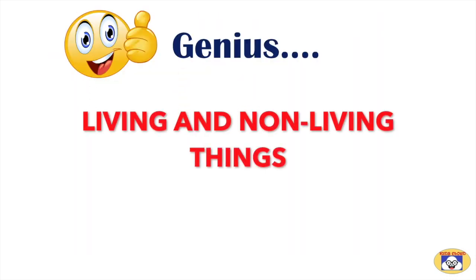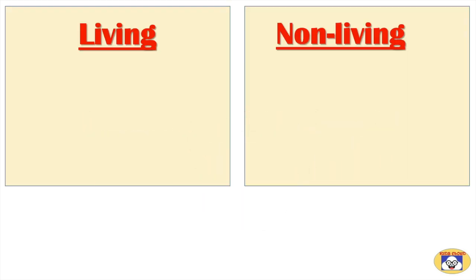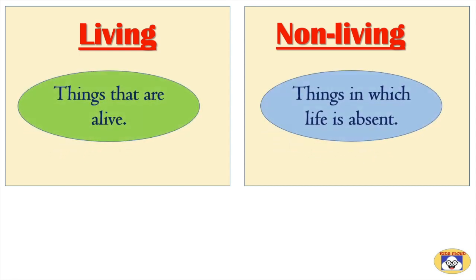It is about living and non-living things. We are surrounded by tremendous objects. In a broader way, they are classified as living and non-living. Things that are alive are called living things, while things in which life is absent are called non-living things.